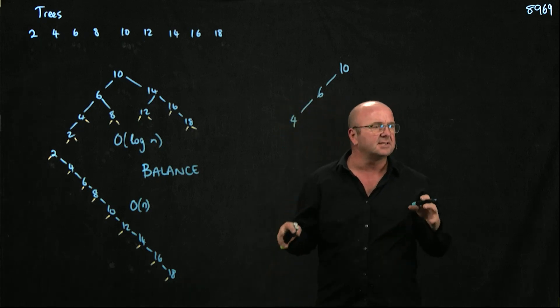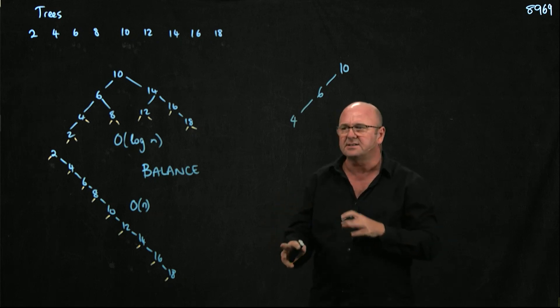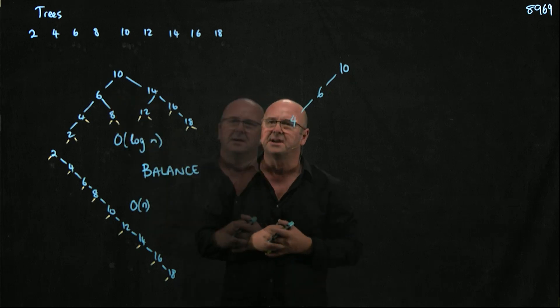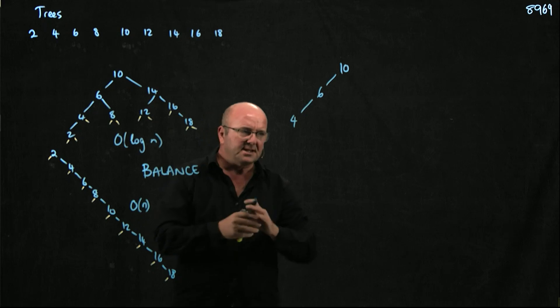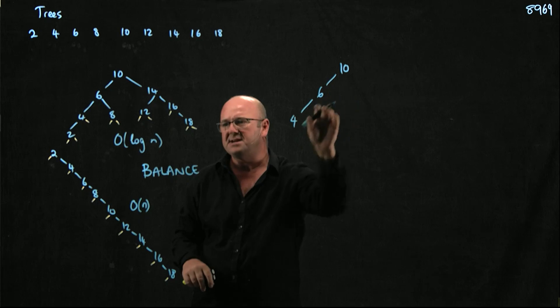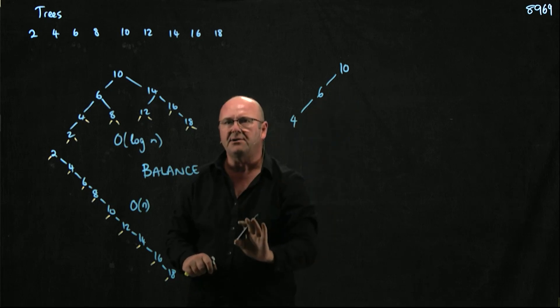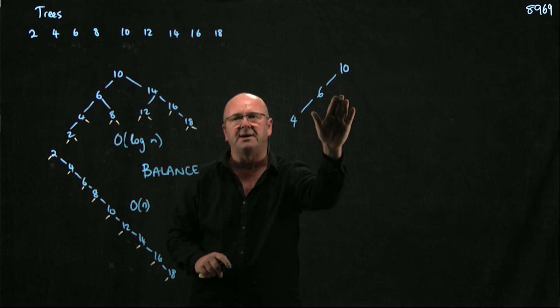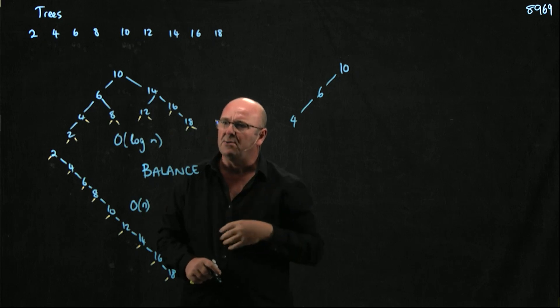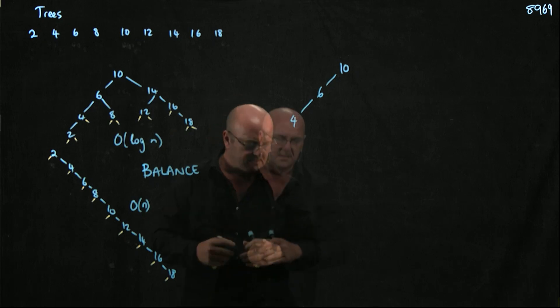And our tree starts getting out of balance, right? It's starting to go more long and straggly than nice and short and bushy tree like. As you'll see over the next few classes, there's some ways that we actually measure balance. But for now, all I'm going to say is that this is not balanced and this is balanced. But as we get there, we'll talk about how we actually measure balance eventually.